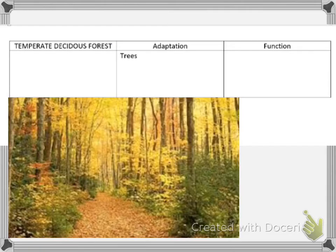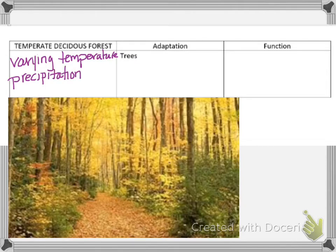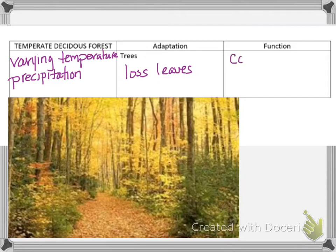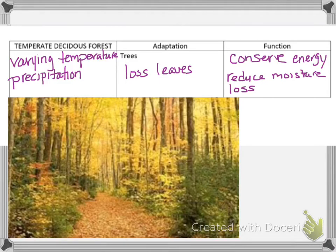Now we're moving on to the temperate deciduous forest, and that is where we live. There are varying temperatures and precipitation. The adaptation for these trees is that their leaves will fall off in the fall and winter — they turn brown and then fall off. The function is that it conserves energy and reduces moisture loss.